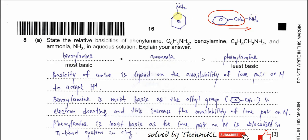For phenylamine, the nitrogen is directly bonded to the benzene ring. The p-orbitals of nitrogen overlap with the benzene ring, and eventually this lone pair delocalizes into the benzene ring, making the lone pair less available. We also need to compare with ammonia.